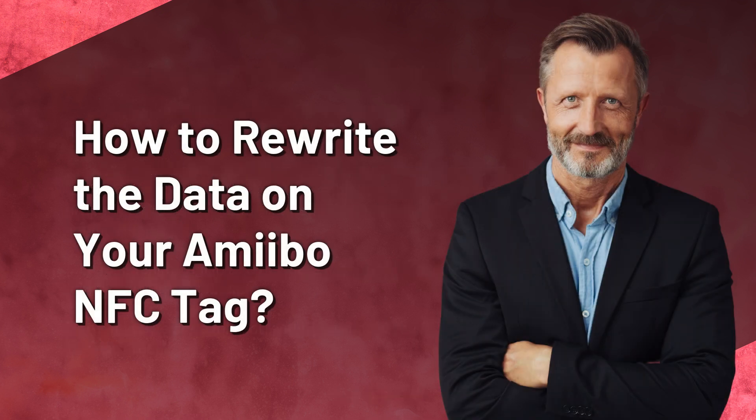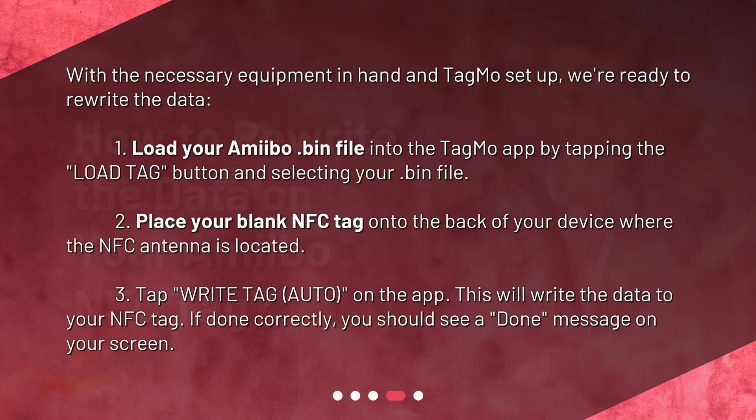How to rewrite the data on your amiibo NFC tag? With the necessary equipment in hand and Tagmo set up, we're ready to rewrite the data. First, load your amiibo .bin file into the Tagmo app by tapping the Load Tag button and selecting your .bin file. Second, place your blank NFC tag onto the back of your device where the NFC antenna is located. Third, tap Write Tag — Auto — on the app. This will write the data to your NFC tag. If done correctly, you should see a 'Done' message on your screen.